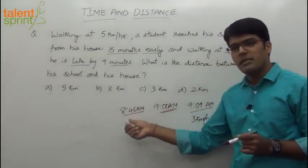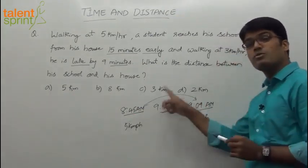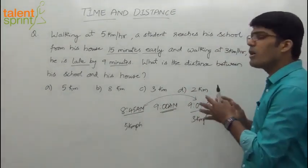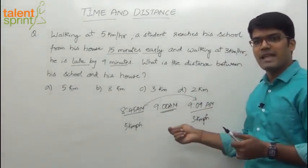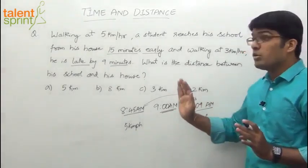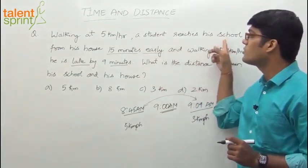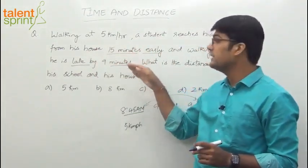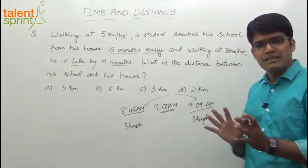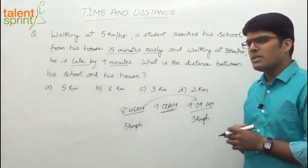In the first case he was early by 15 minutes, and now he is late by 9 minutes. The difference between 8:45 and 9:09 is 24 minutes. Also, in both cases the distance travelled is the same — walking at 5 kmph from his house to school, and walking at 3 kmph from his house to school — the distance covered is the same in both cases.